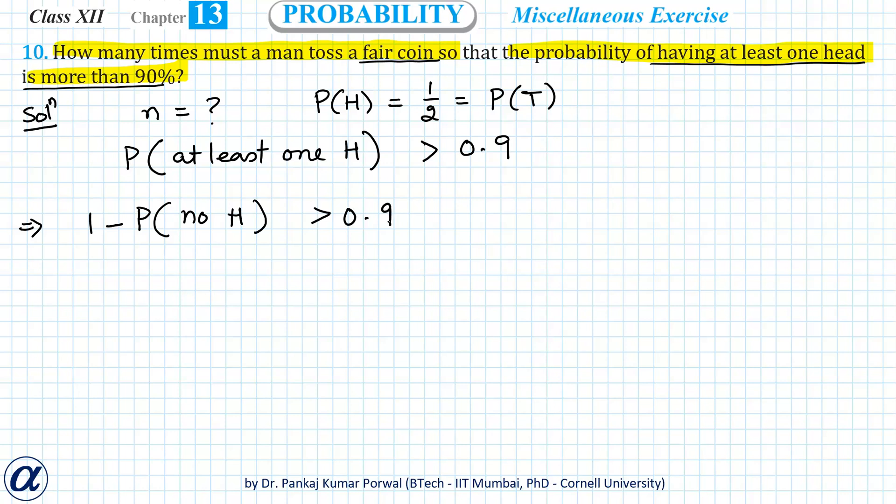Now probability of no head I can write as: 1 - nC0 × (1/2)^0 × (1/2)^n, because the number of outcomes for head is 0, so all of them should be tails (n tails). This should be greater than 0.9.